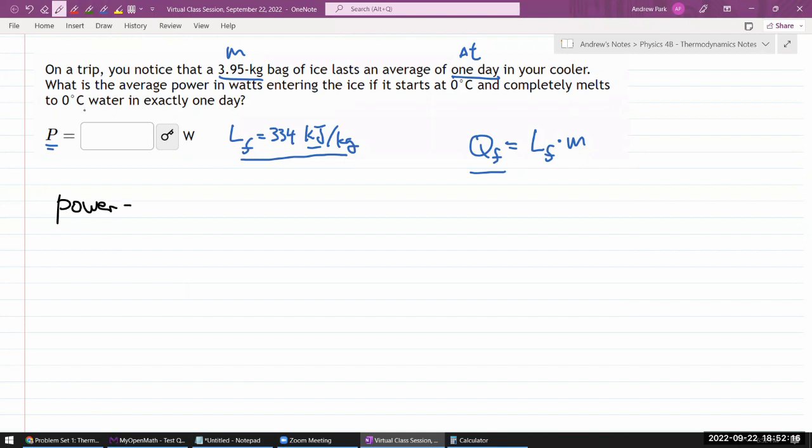Power in physics is defined as work per time or rate of work done. The more general description I prefer is change of energy, which can be related to work, per change of time. That's why this information is necessary.